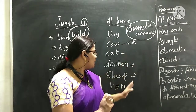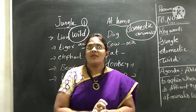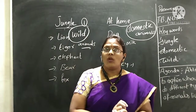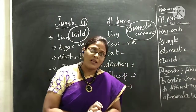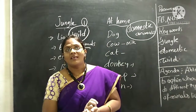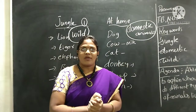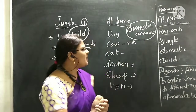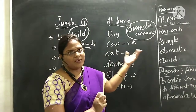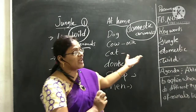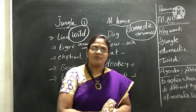Cat, hen, sheep, and cow — all these are helpful for us. Sheep gives us wool. Cow gives us milk. Hen gives us eggs. Some people sell these things and earn money. You should keep in mind: wild animals live in the forest, domestic animals live in our surroundings.